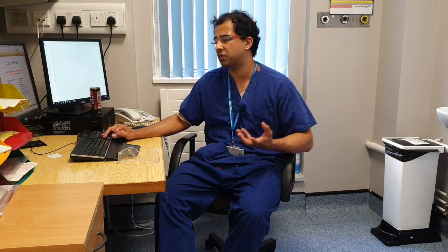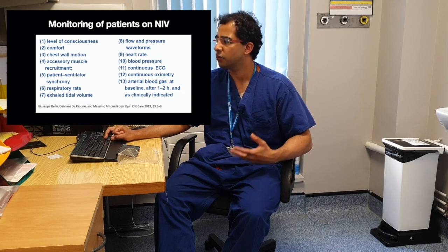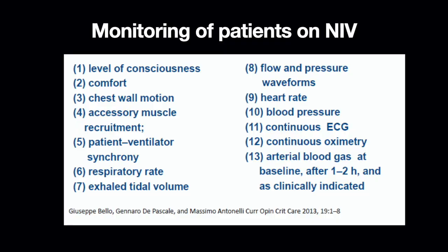Now we talk about monitoring of patients receiving non-invasive ventilation. You monitor the level of consciousness with the standard Glasgow Coma Scale. You look at how comfortable they are with the machine, the chest wall movement, and whether they are synchronizing with the ventilator. You assess whether they are using accessory muscles of respiration, check the tidal volume setting on the machine, see the respiratory rate, and look at the pressure and flow waveforms if applicable. You monitor them with continuous ECG and pulse oximetry, and check the heart rate and blood pressure regularly. Blood gas should be done at one hour and at four hours after starting BiPAP or bi-level positive airway pressure. When you start CPAP, again blood gas should be repeated after one hour and at four hours to see the improvement in oxygenation.